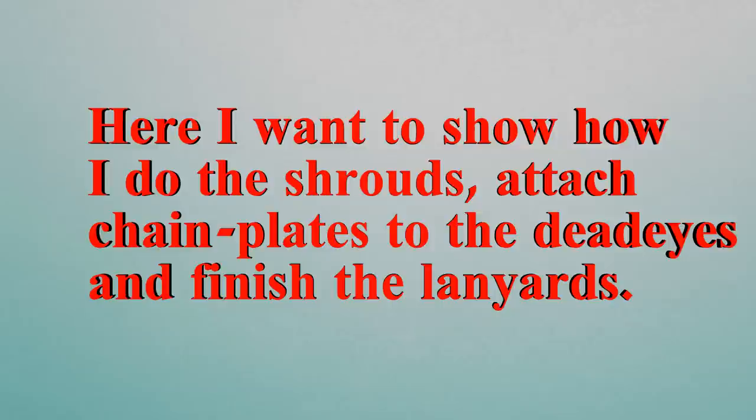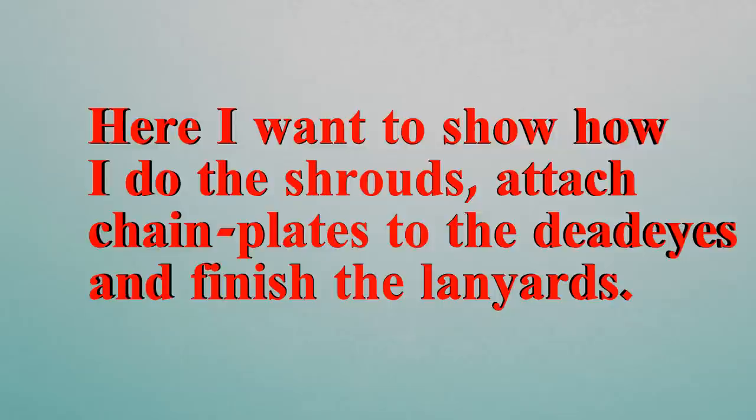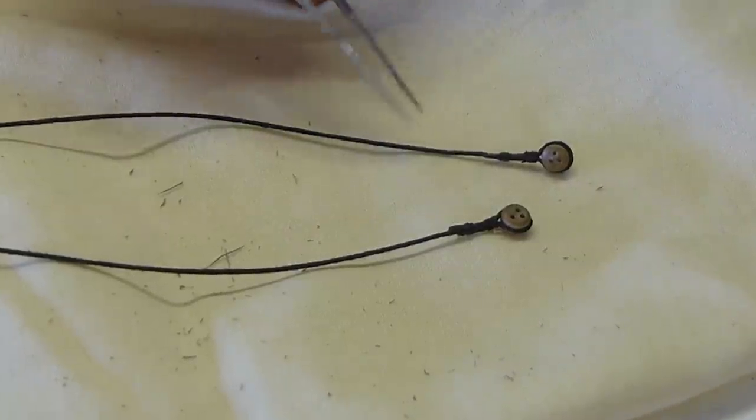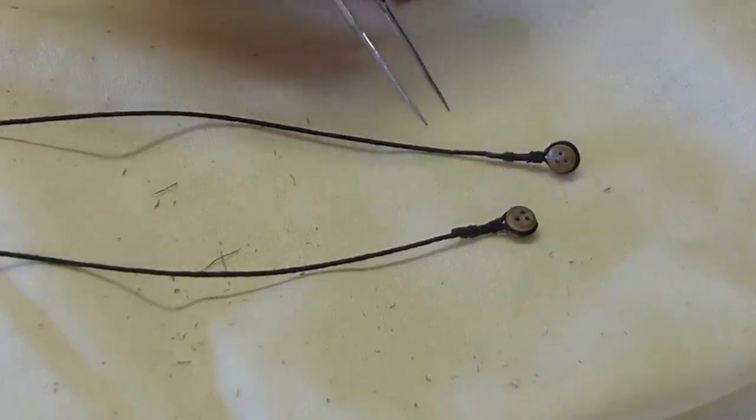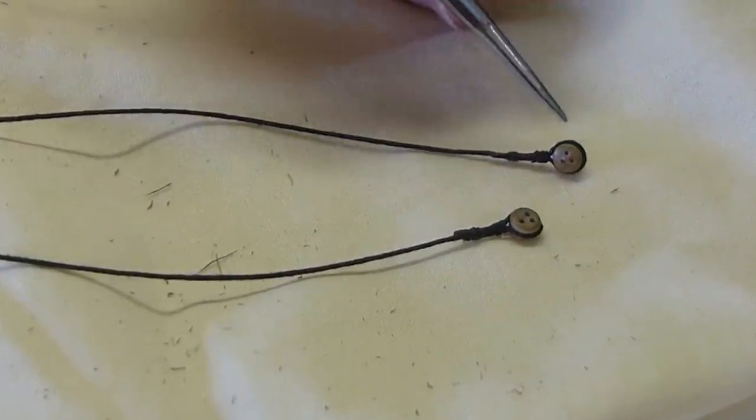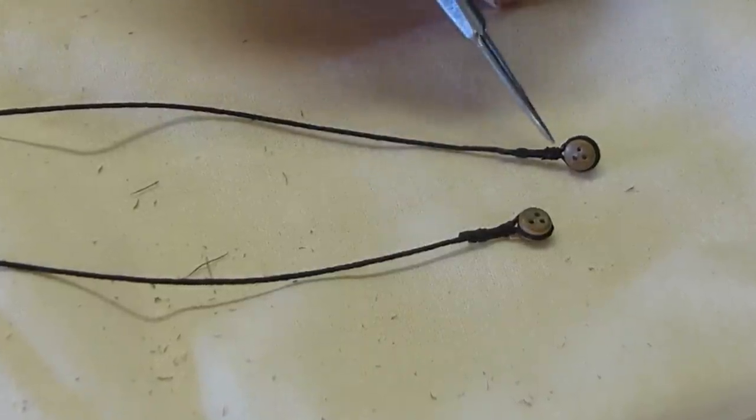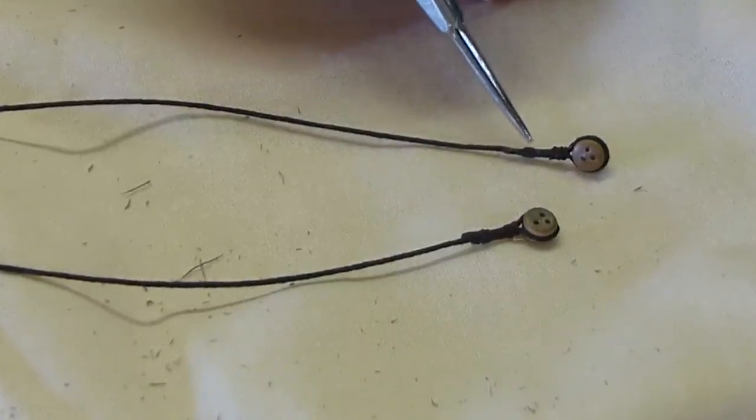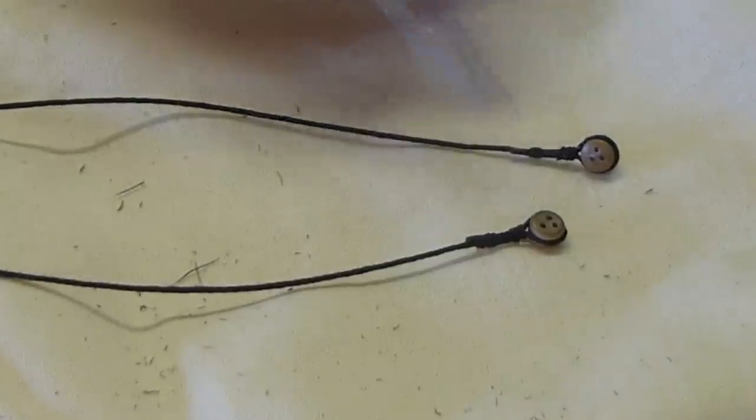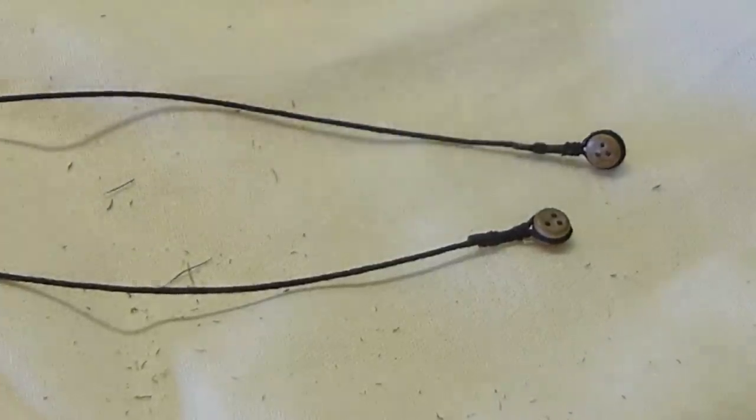To show you how I went about this, I built a small mock-up with two shrouds. The shrouds here are thirty thousandths of an inch in diameter. The deadeyes are four millimeters or five thirty-seconds of an inch. And then there are two whippings or sizings. Normally there are four or five on our actual ship.